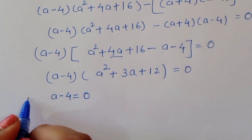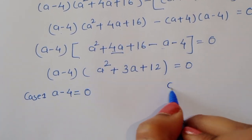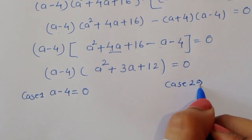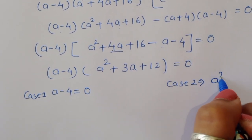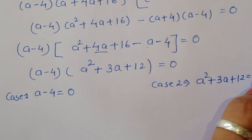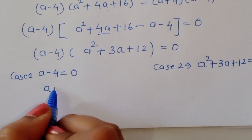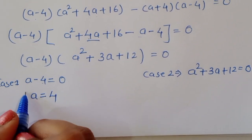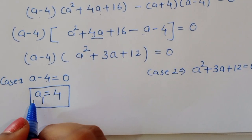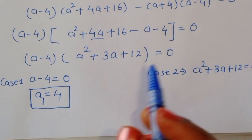We now have two cases. Case 1: a - 4 = 0, which gives a = 4. This is the first value, a₁ = 4. Case 2: a² + 3a + 12 = 0, which we need to solve separately.